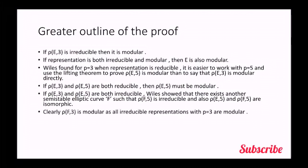Now clearly rho f3 is modular as all irreducible representations with p equals to 3 are modular, as already explained earlier. Now if f is modular, then rho f5 must also be modular. It's quite obvious. Now rho e5 is modular because I have already mentioned that rho e5 and rho f5 are isomorphic in nature. So if rho f5 is modular, then rho e5 must also be modular.